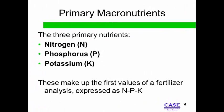Primary nutrients are required in the largest amounts. Nutrients are represented by their elemental symbol, as shown here for nitrogen, phosphorus, and potassium. N, P, and K are the first three numbers for any fertilizer formulation.